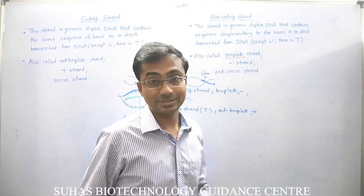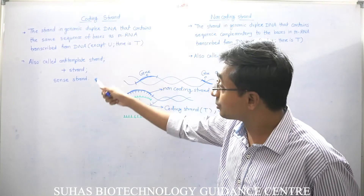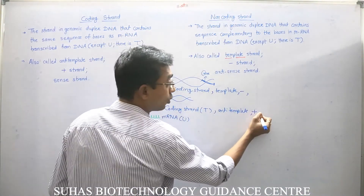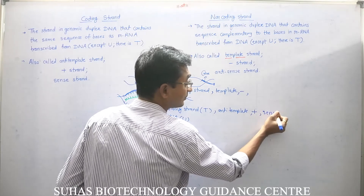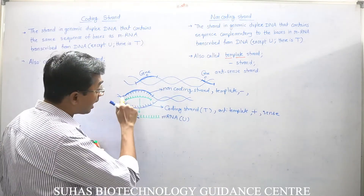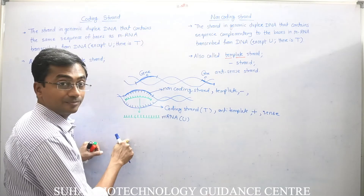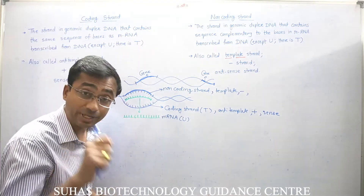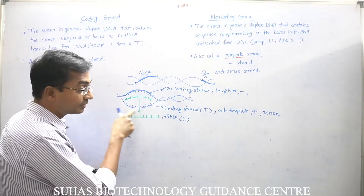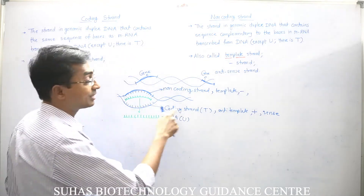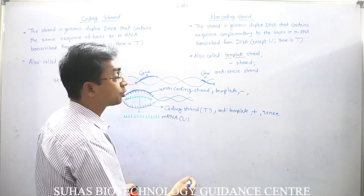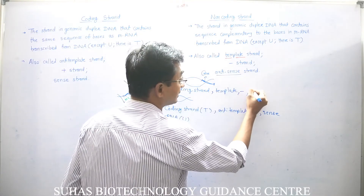Other than that, this coding strand is also called the sense strand, because the sense of the mRNA which is going to form protein is exactly the same as the sense of this coding strand — and that's why it is called sense. So what is the non-coding strand called? It is called the anti-sense strand.